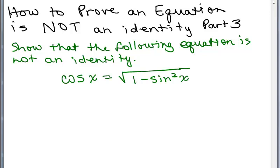This is part three of how to prove an equation is not an identity. We're working with trig equations. The problem is: show that the following equation is not an identity — cosine of X equals the square root of 1 minus sine squared X.